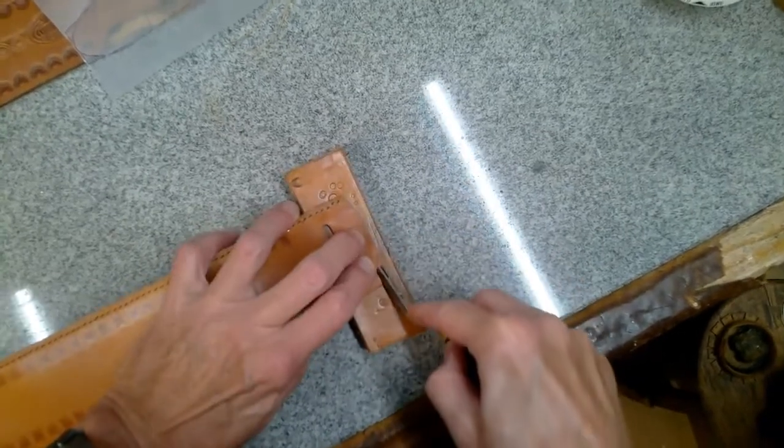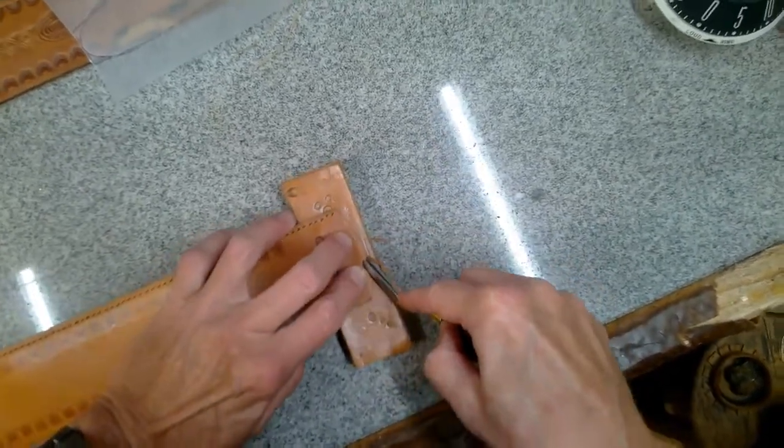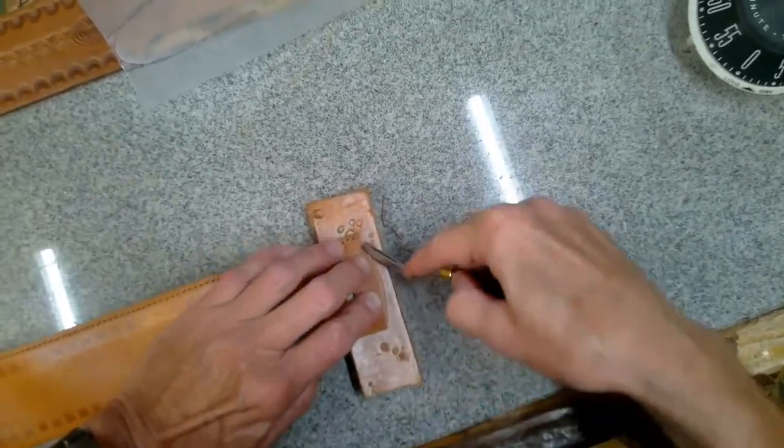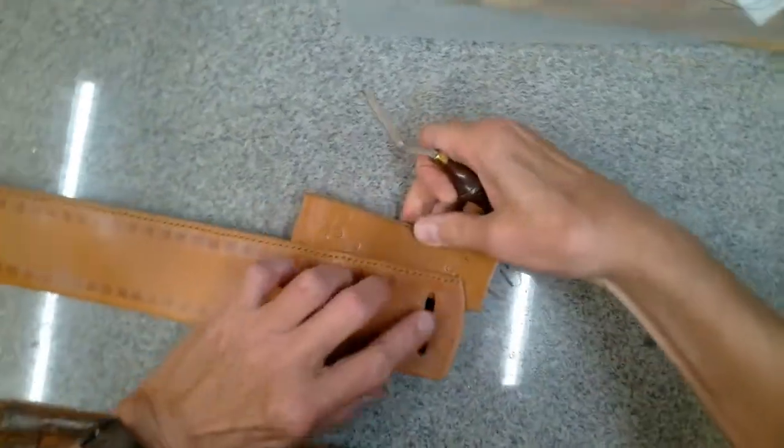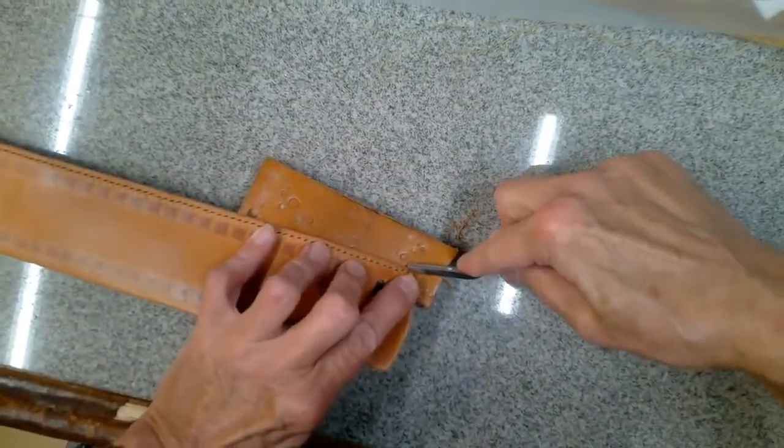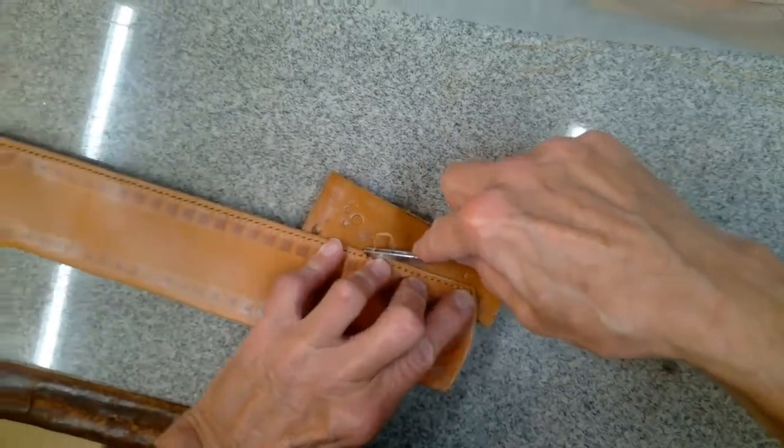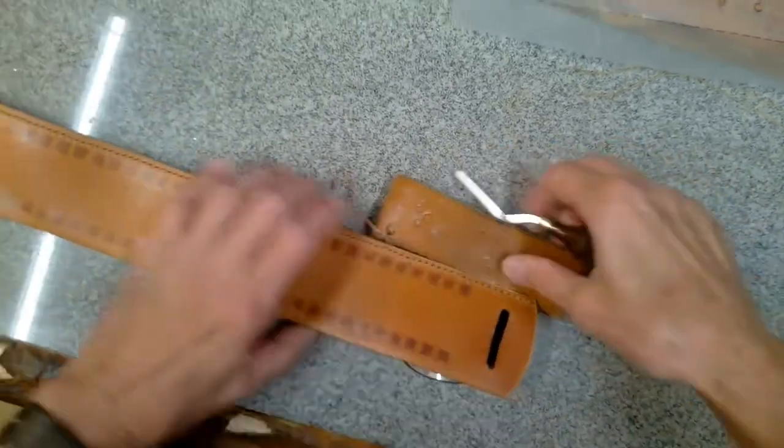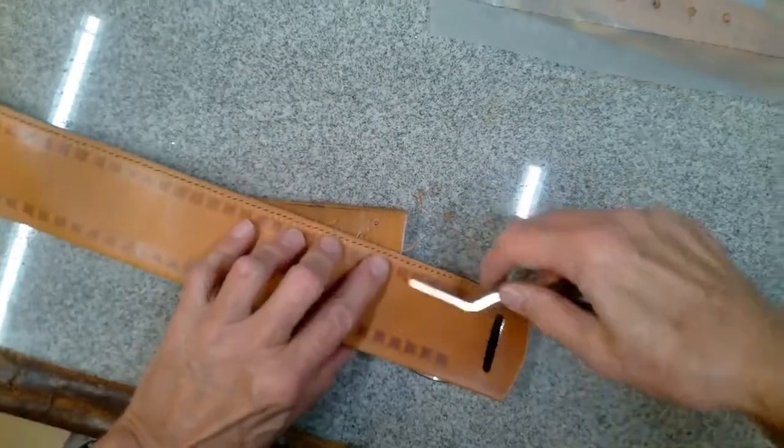But before the edges of the money belt can be sewn together, everything else on the money belt must be assembled. The cartridge loops must be sewn and the chape and billet riveted and sewn on. Then the edges of the money belt can be sewn together.